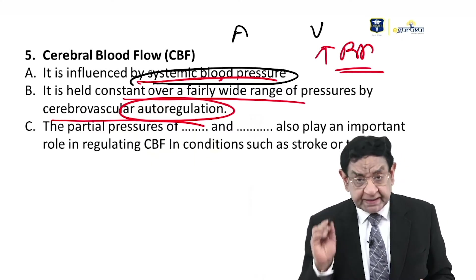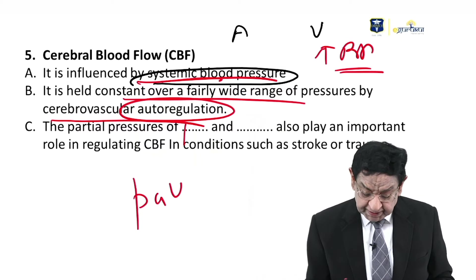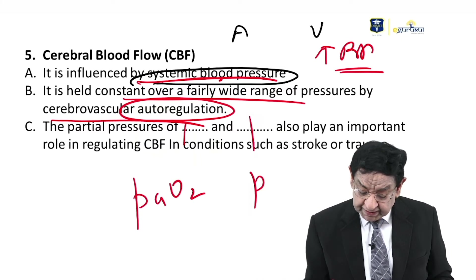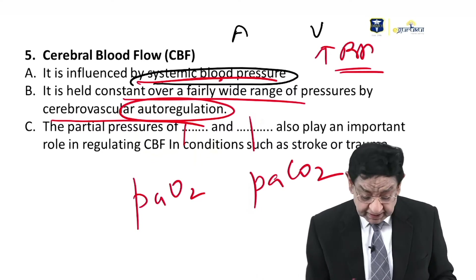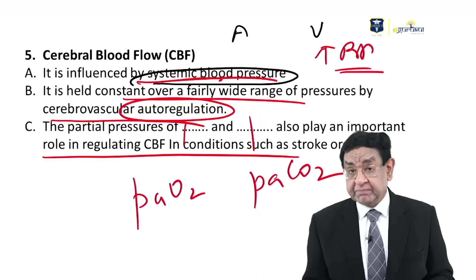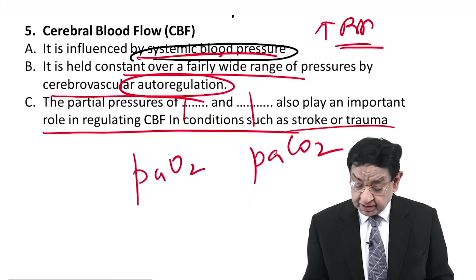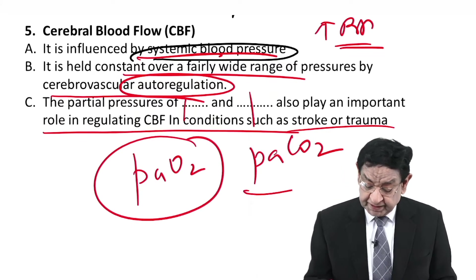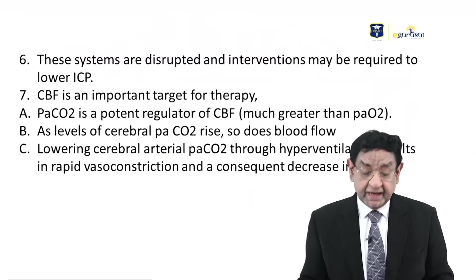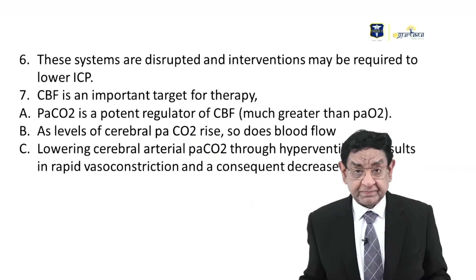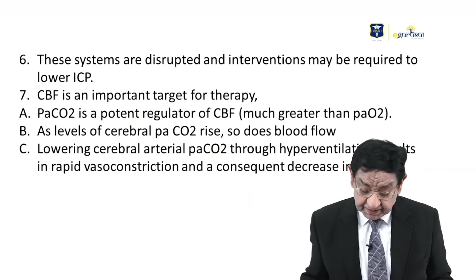In addition to this, partial pressure of oxygen — PaO2 and PaCO2 — also have an important role in regulating cerebral blood flow, especially in conditions like stroke and trauma. And whenever this is disrupted, it can again lead to increased ICP.